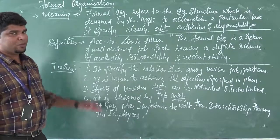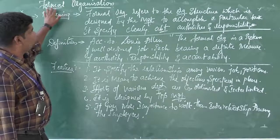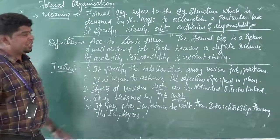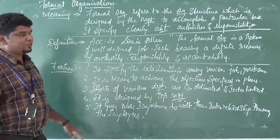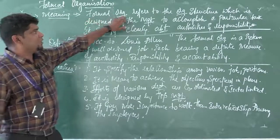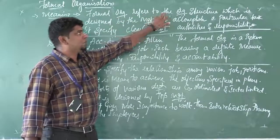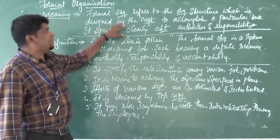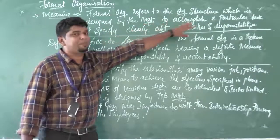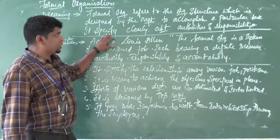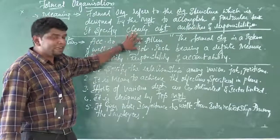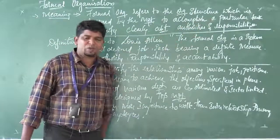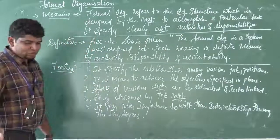So what is formal organization? Formal organization refers to the organization structure which is designed by the management to accomplish a particular task. It specifies clearly about the authorities and also responsibility.